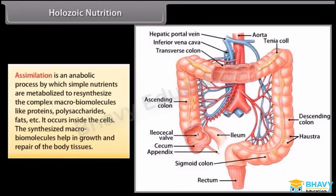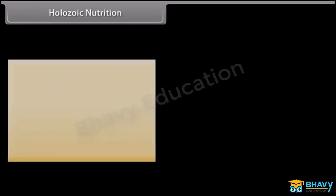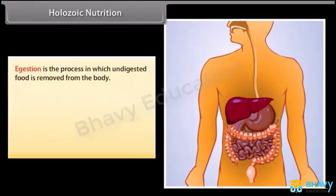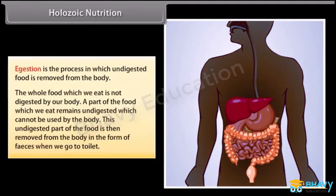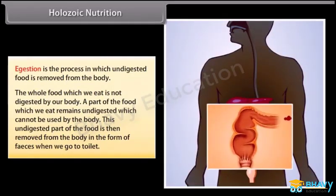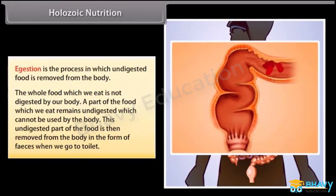Assimilation is an anabolic process by which simple nutrients are metabolized to re-synthesize complex macro biomolecules like proteins, polysaccharides, fats, etc. It occurs inside the cells, and the synthesized macro biomolecules help in growth and repair of body tissues. Egestion is the process in which undigested food is removed from the body. The part of food which remains undigested and cannot be used by the body is then removed in the form of feces.